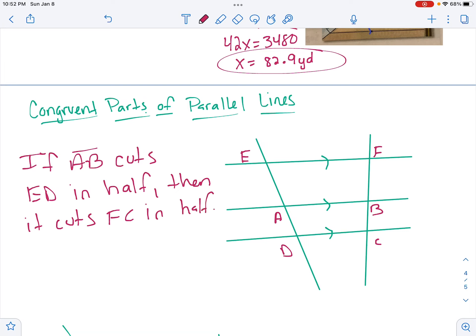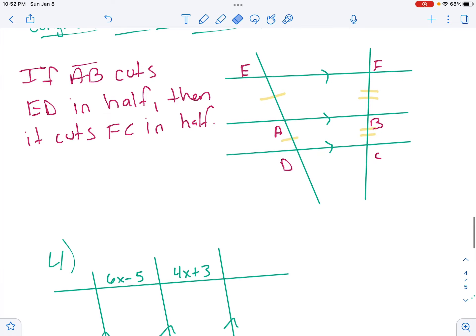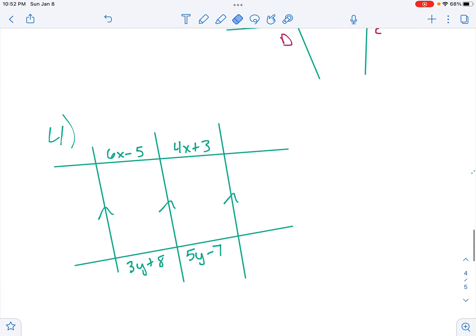So when you have three parallel lines, if the middle one cuts one side into two equal parts, then it cuts the other side into two equal parts. The guys across from each other are not equal. It's the guys on the same side that are equal. So what's that going to look like? It looks like this. So we have three parallel lines. If we know that it cuts one of them in half, we can set those two guys equal. So we'd have 6X minus 5 equals 4X plus 3.